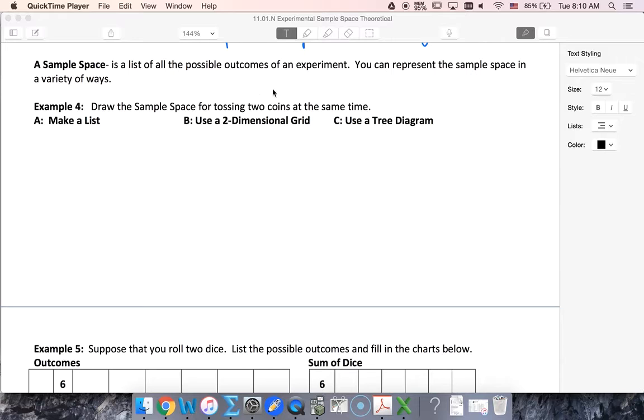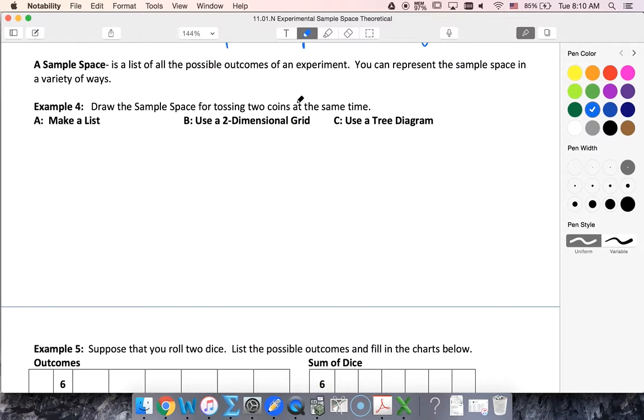So if I toss two coins at the same time, well let's just think about this first. Two coins at the same time - I could get two heads, I could get heads and tails or tails and heads if I can differentiate between them, or I could get two tails.